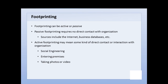Active footprinting means there is some kind of direct contact or interaction with our target. This could be interaction with the people in the form of social engineering. It could also mean physical access — maybe we enter the premises of the organization disguised as a janitor, salesperson, or maintenance person, and case the joint. We may see what the layout is, who works where, what the security is, and also take photos or video to help plan our attack later.